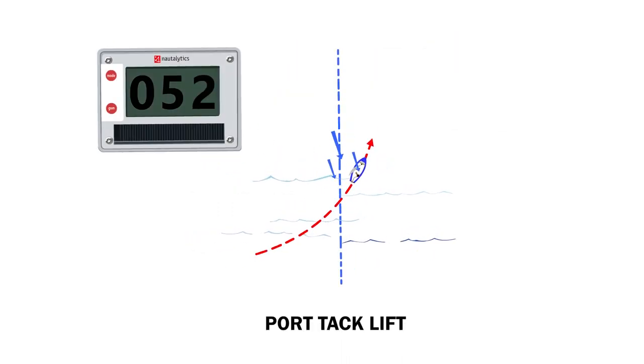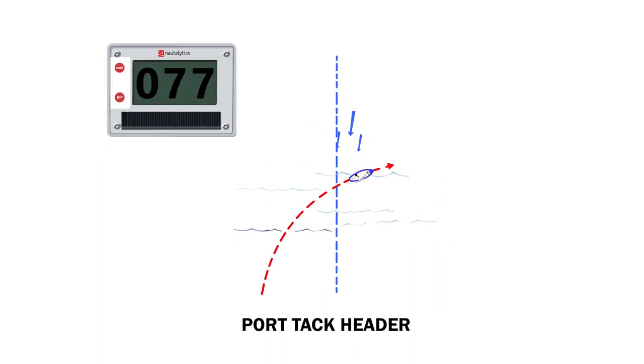The opposite is true on port tack. A lower compass heading is a lift and a higher compass heading is a header.